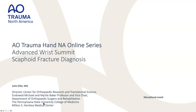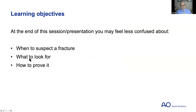Good evening everyone. I have a short talk on scaphoid fracture diagnosis. The three questions we really want to address are: when to suspect a fracture, what to look for, and how to prove it. These are basic things, but it's amazing how much controversy exists surrounding them. The scaphoid is the most common carpal fracture, occurring often in young men, with a 90% union rate. The common mechanism is fall on the outstretched hand with hyperextension.